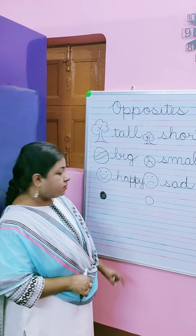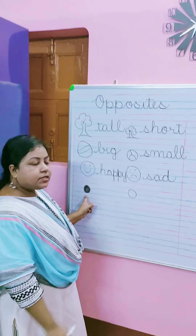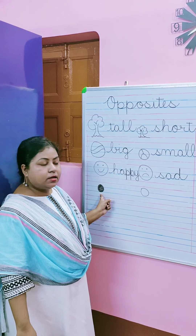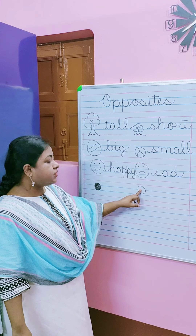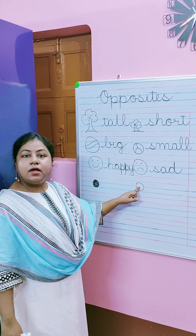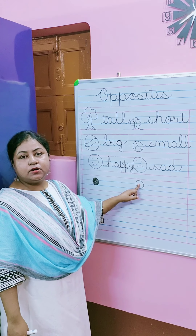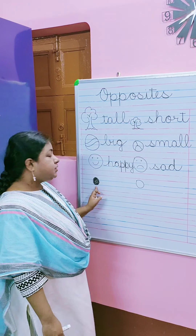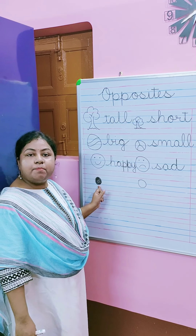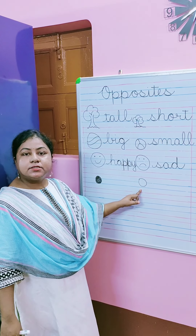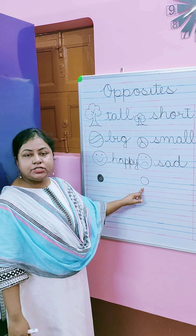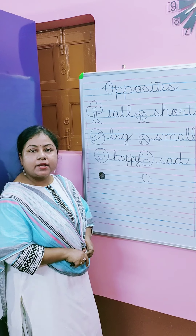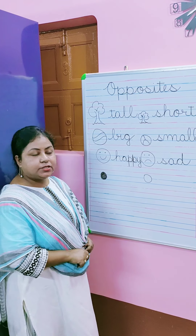Children, you can see this is a dark color and this is a light color. Or you can also say this is a black color and this is a white color. So I will write black and white.